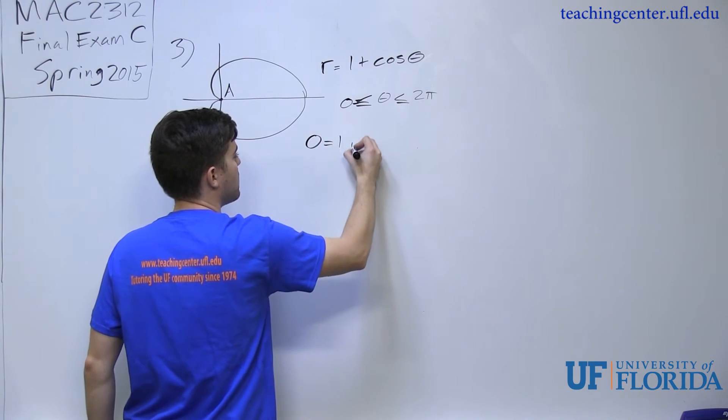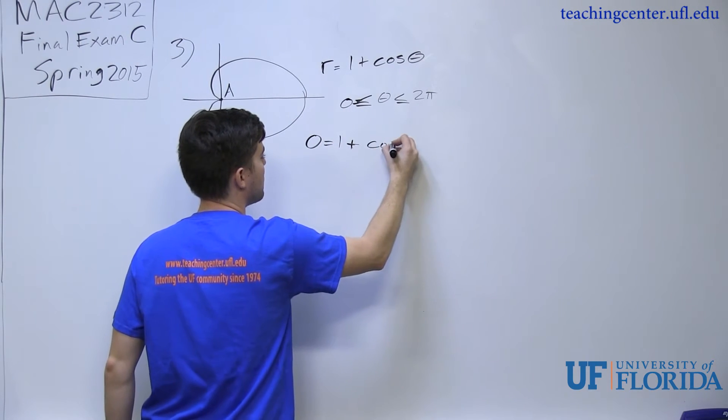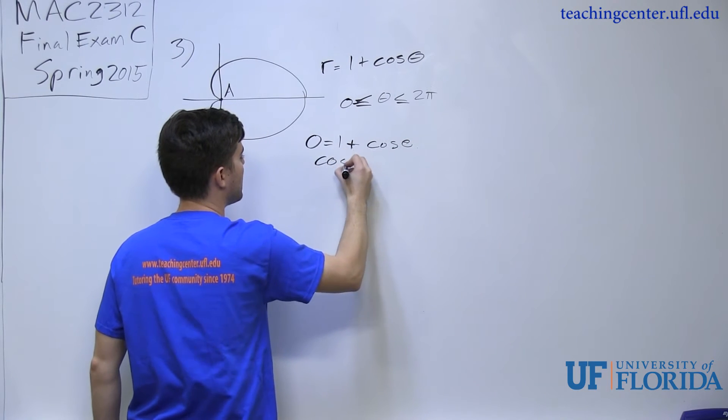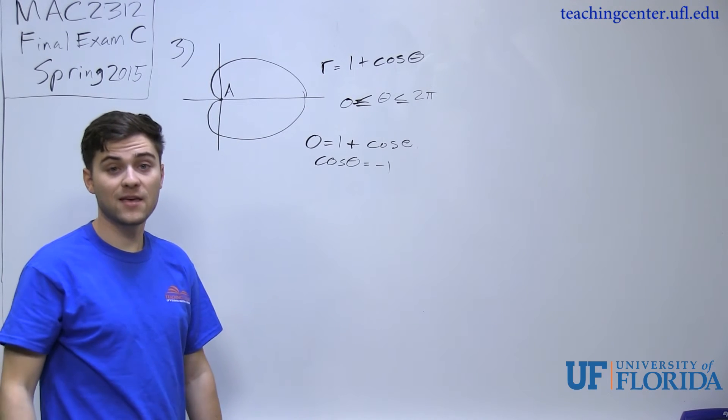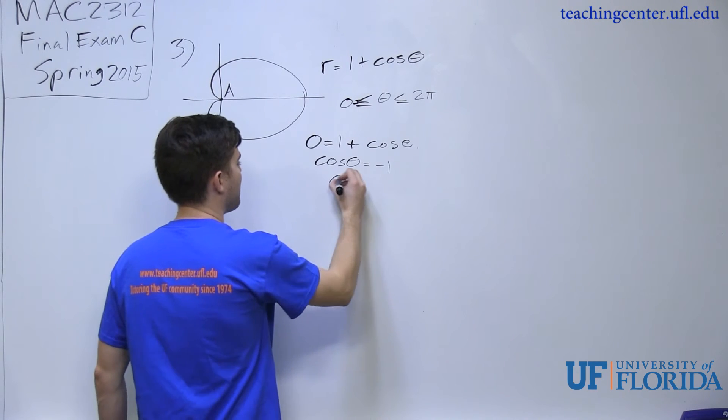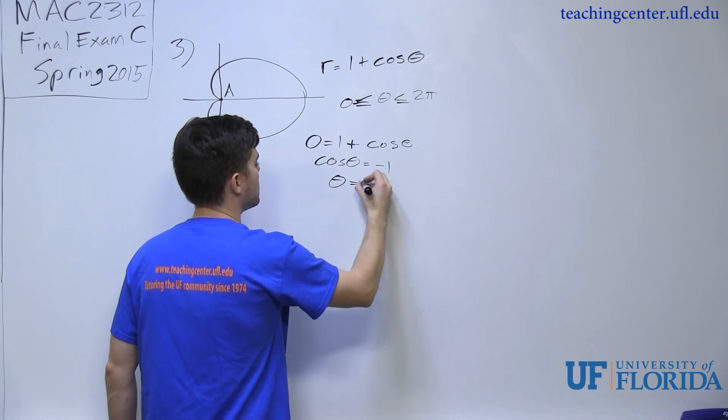So 0 equals 1 plus cosine of theta, cosine of theta equals negative 1. There's only one value of theta that gives me negative 1. Theta is equal to pi.